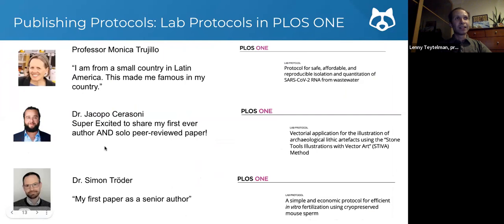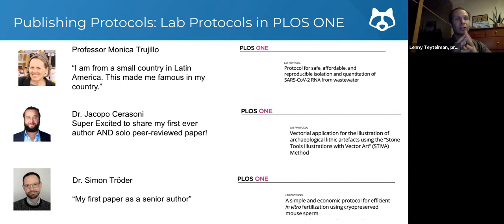From some of these published papers, there are wonderful quotes from authors who are really happy with the experience. A protocol from Professor Monica Trujillo and colleagues was actually profiled in the New York Times. For Jacopo, his lab protocol was his first paper as a PhD student. For group leader Simon Throder, the protocol was his first paper as a senior author. If you're a graduate student and it takes a year to develop a method and then four more years to get results, you don't have to wait five years for your first paper — you can get credit for that year of method development through this partnership.